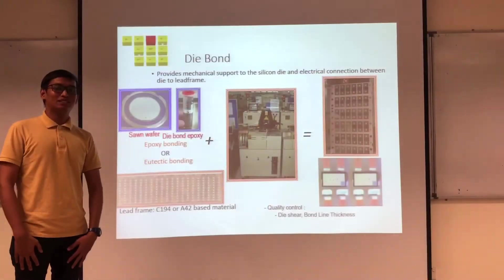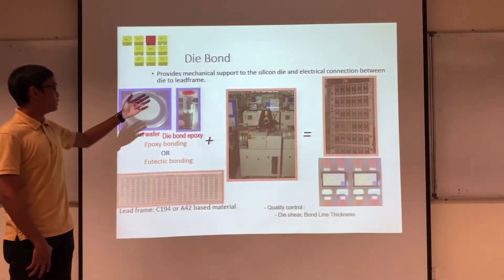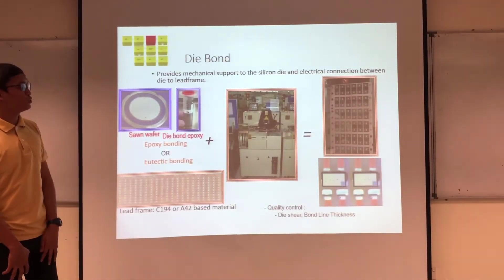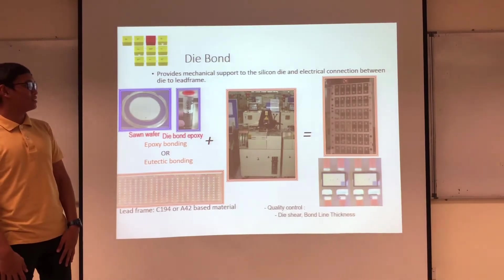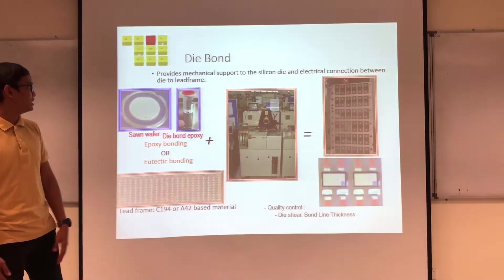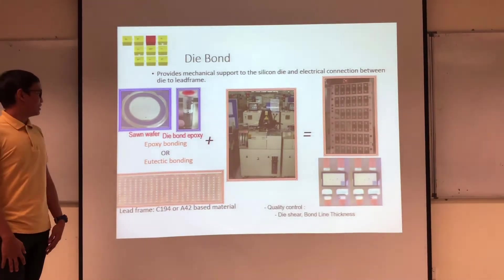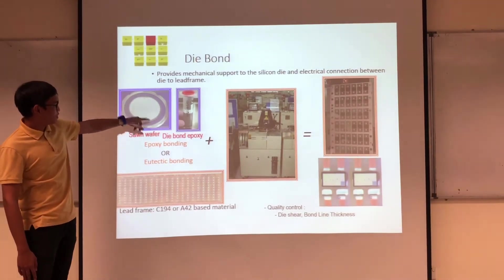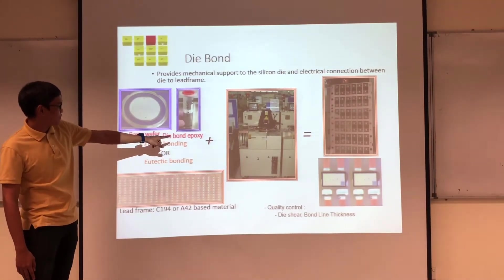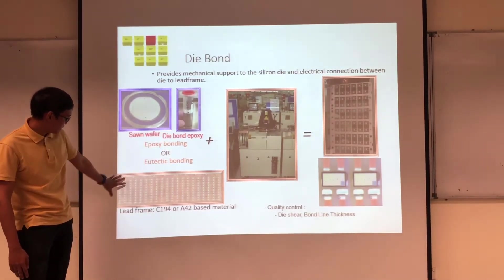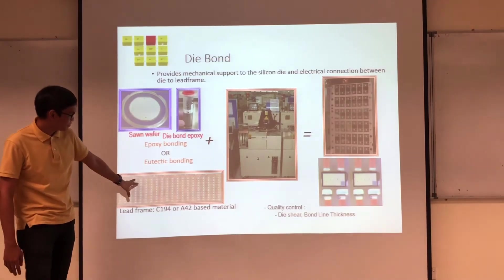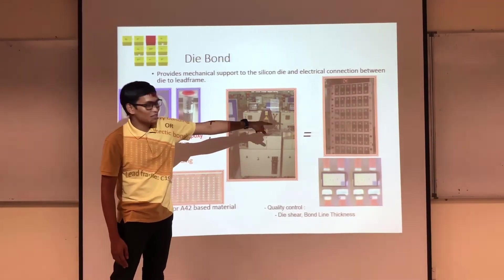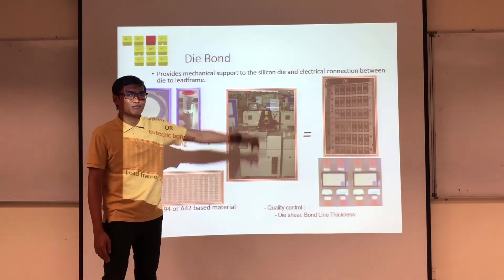Die Bond provides mechanical support to the silicon dies and electrical connection between the die and the lead frame. This shows a sawn wafer with the die bond material. Shown here is the die bond machine before and after completing the die bond process.